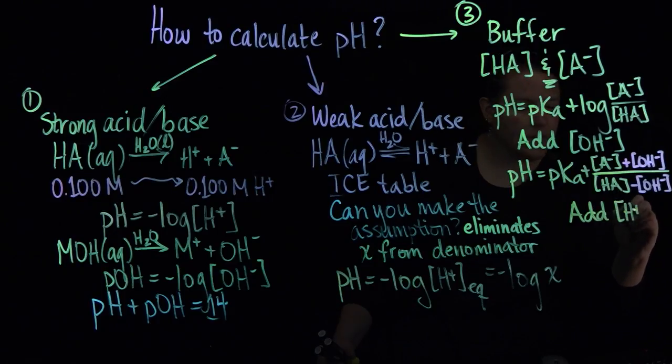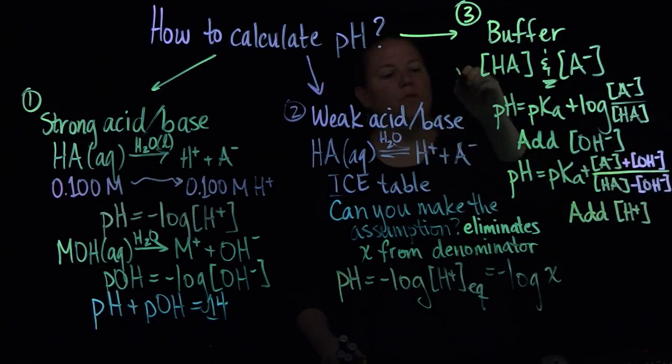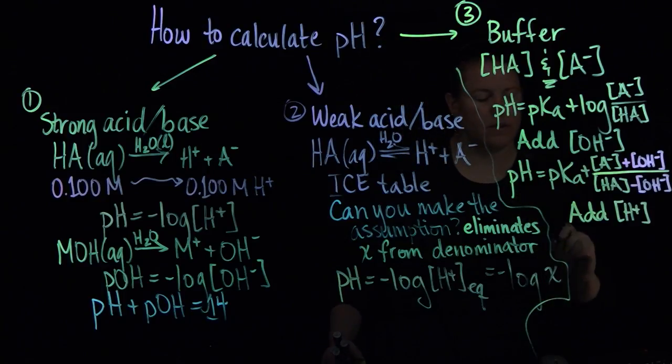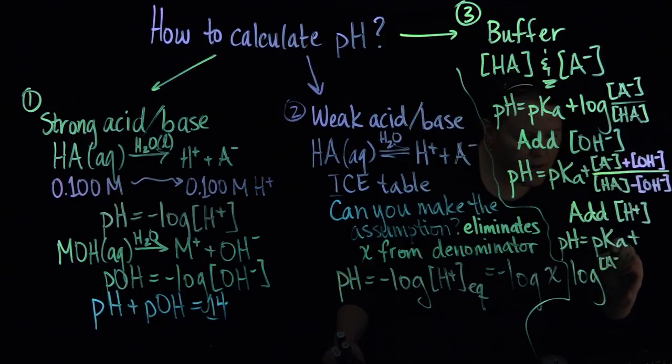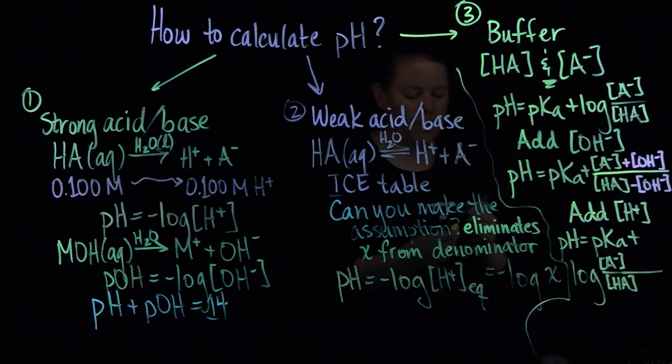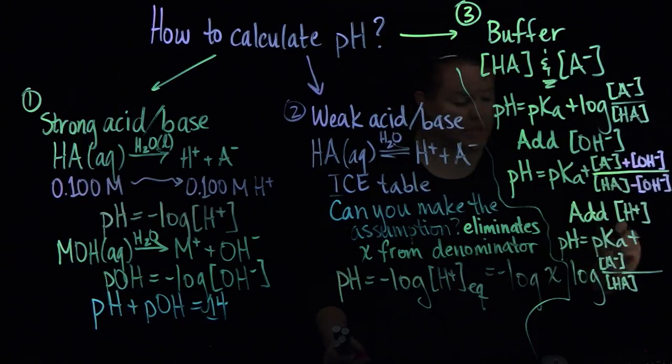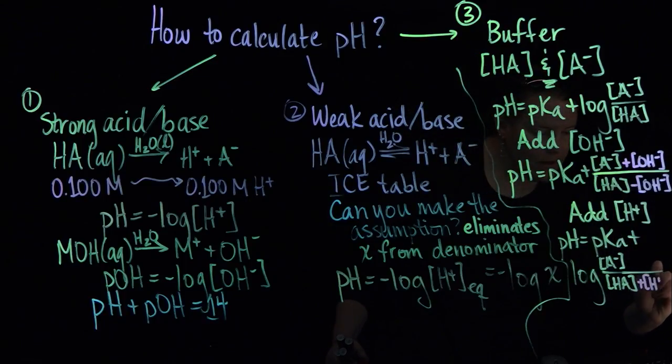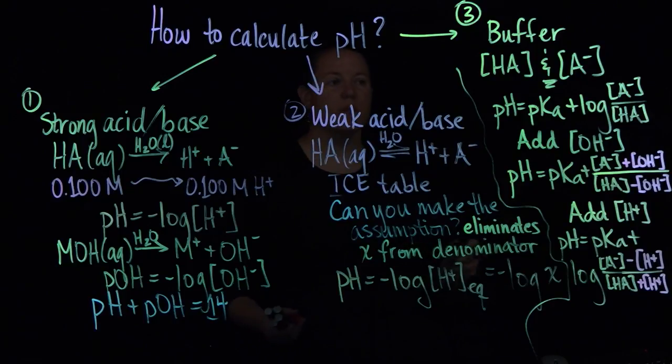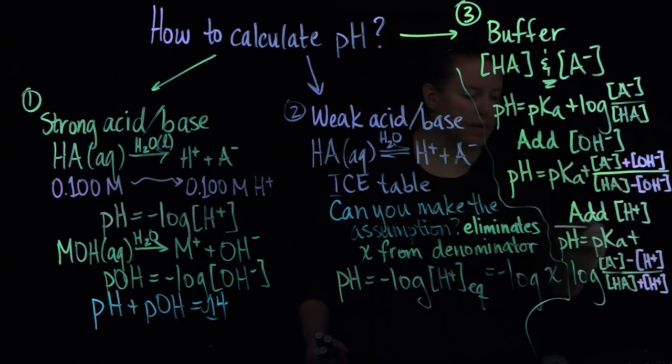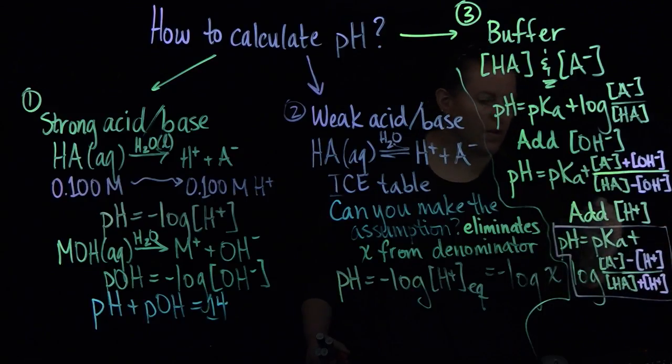And you can do that directly in the Henderson-Hasselbalch. Same kind of deal if you have a strong acid. If you add acid, like for instance, HCl or something along those lines. Then again, you use the Henderson-Hasselbalch just as it is. But in this case, the roles are reversed. So in this case, it adds to the acid. And it neutralizes out the equivalent amount of base. So those, you can actually build on the Henderson-Hasselbalch if you need to.